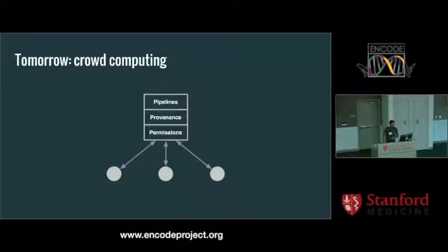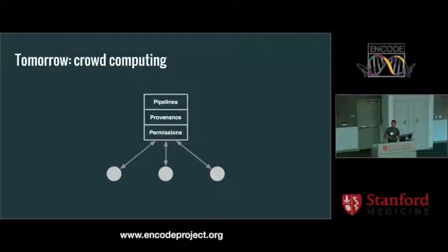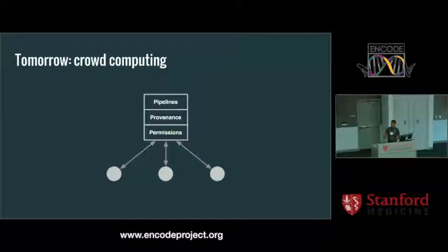Instead of pulling from a flat file repository, this crowd computing model involves pushing into some combination of a database and a data lake. This pooled computing resource not only allows for network effects among people, but also allows people to transform the data, analyze it, track where every atom of data comes from — which we call provenance — and to control permissions, meaning who can see what.